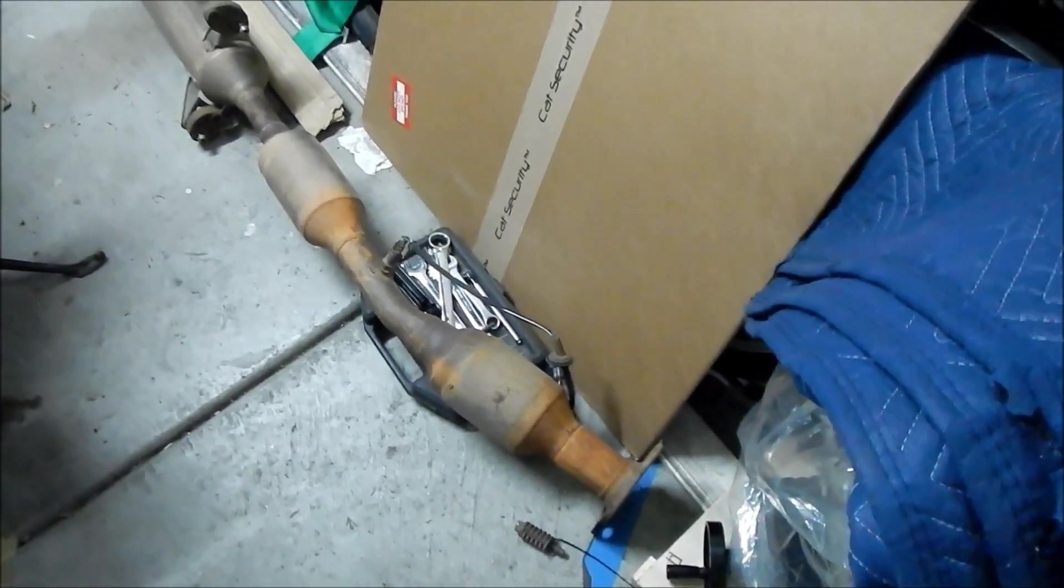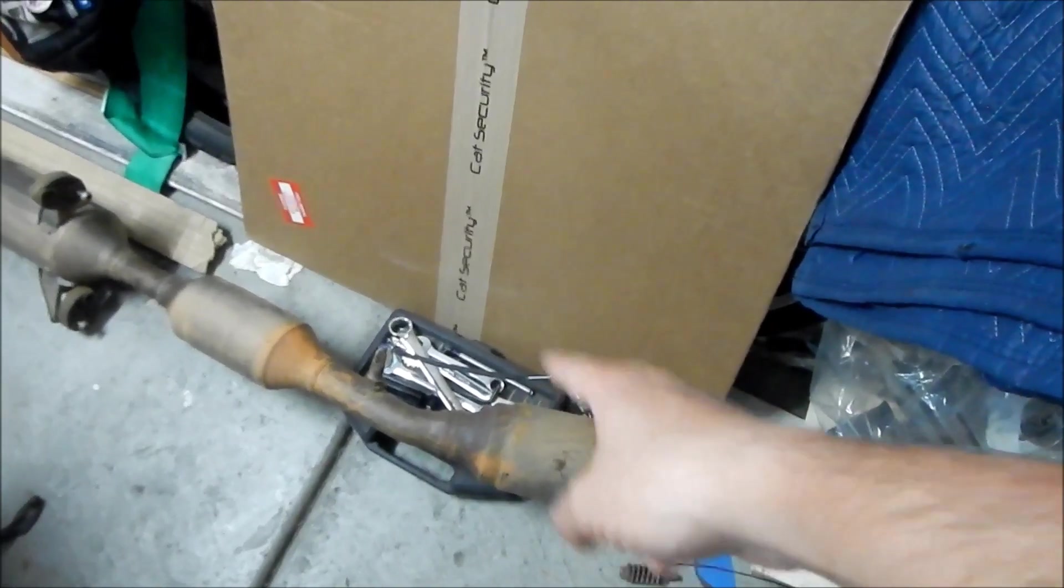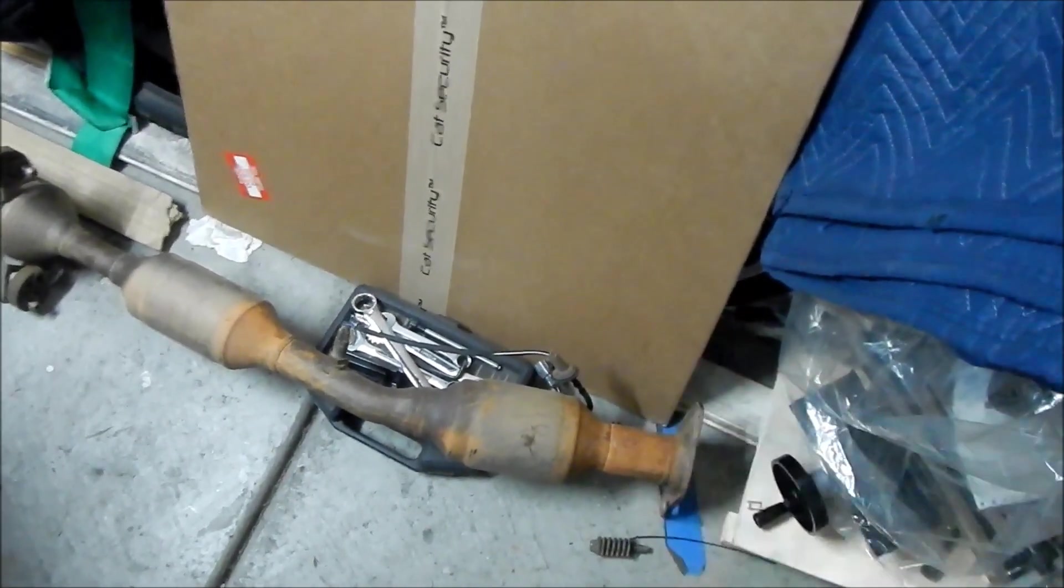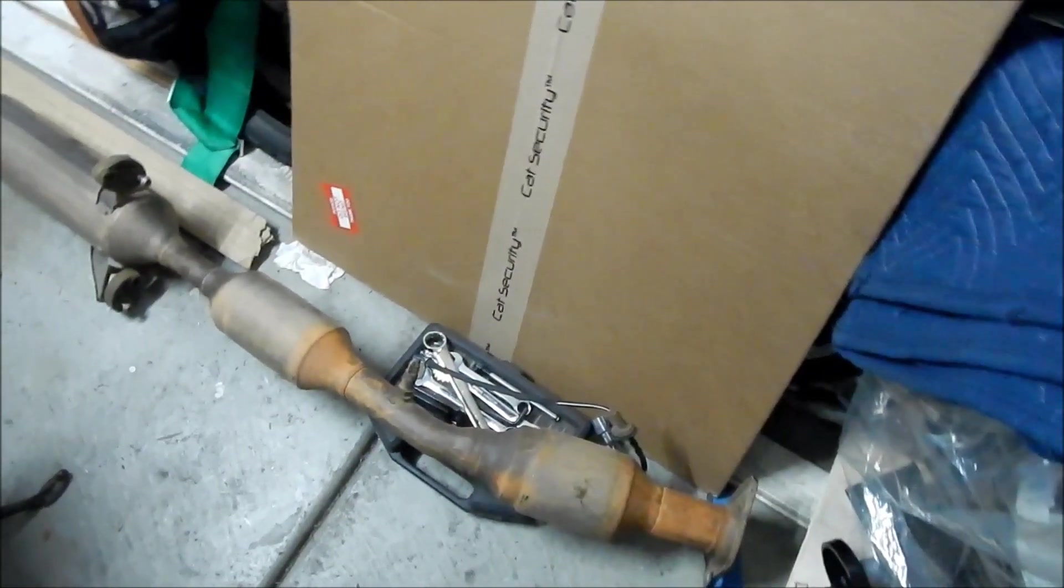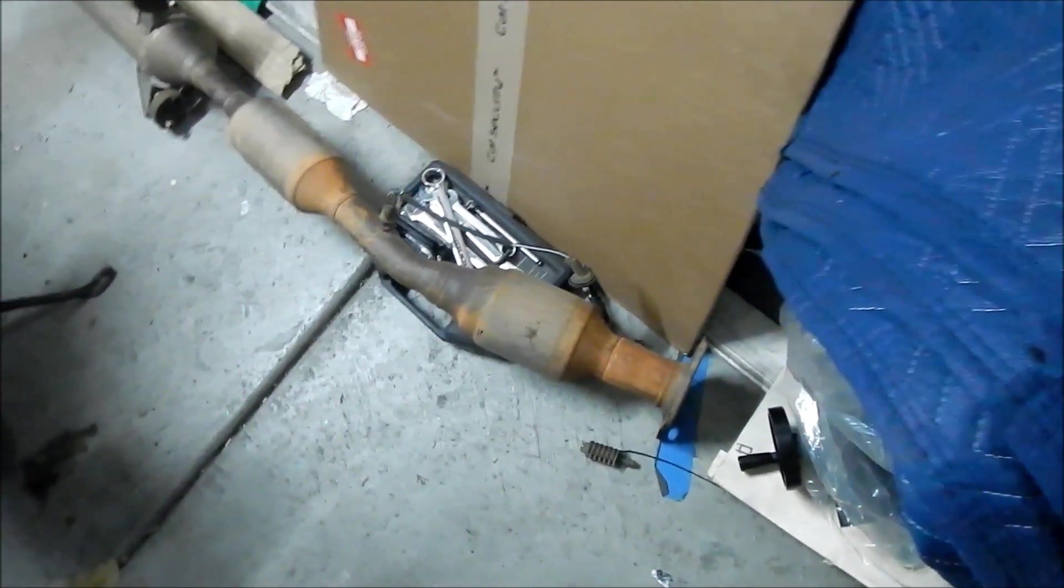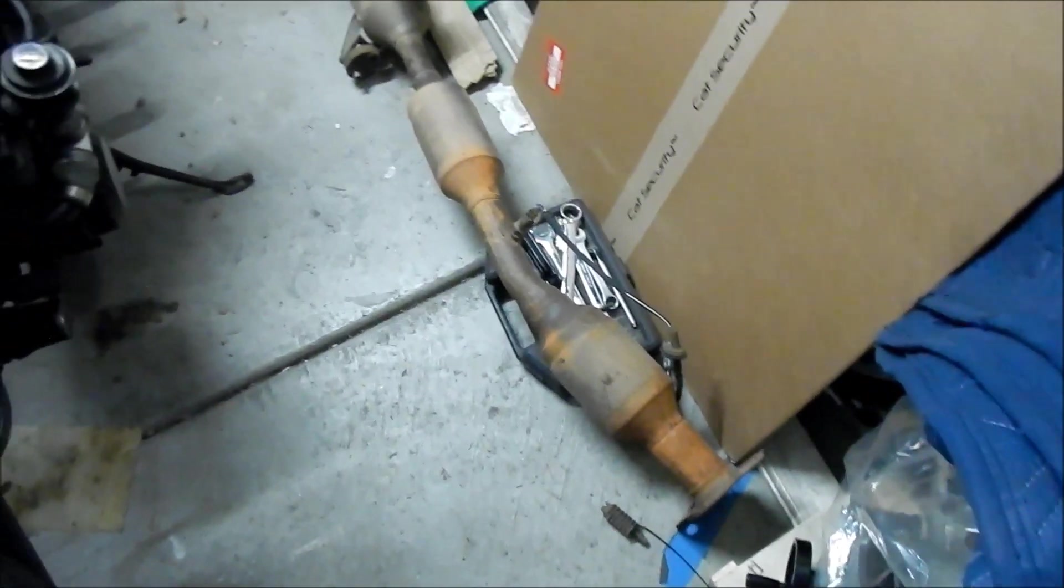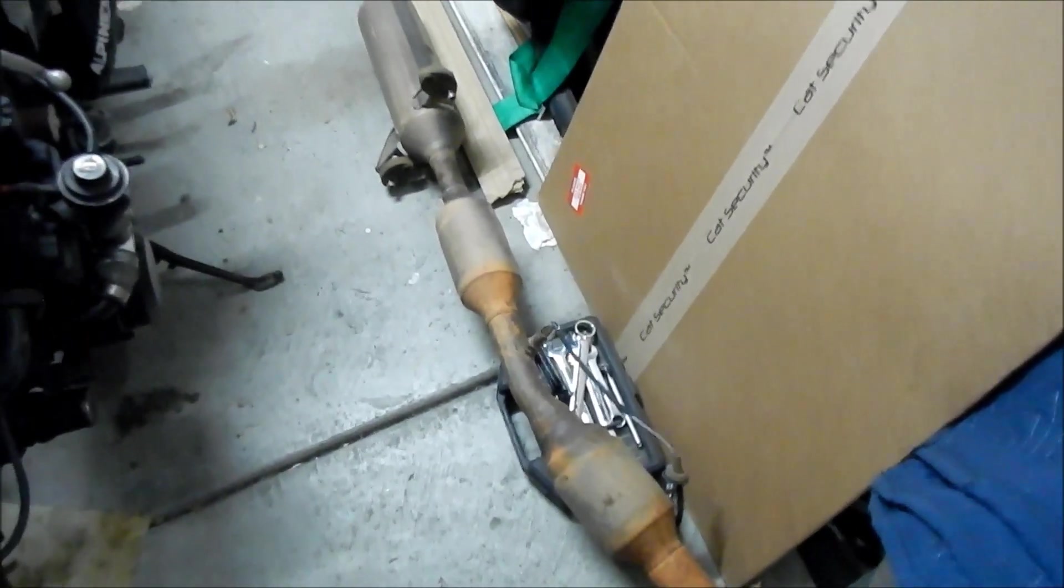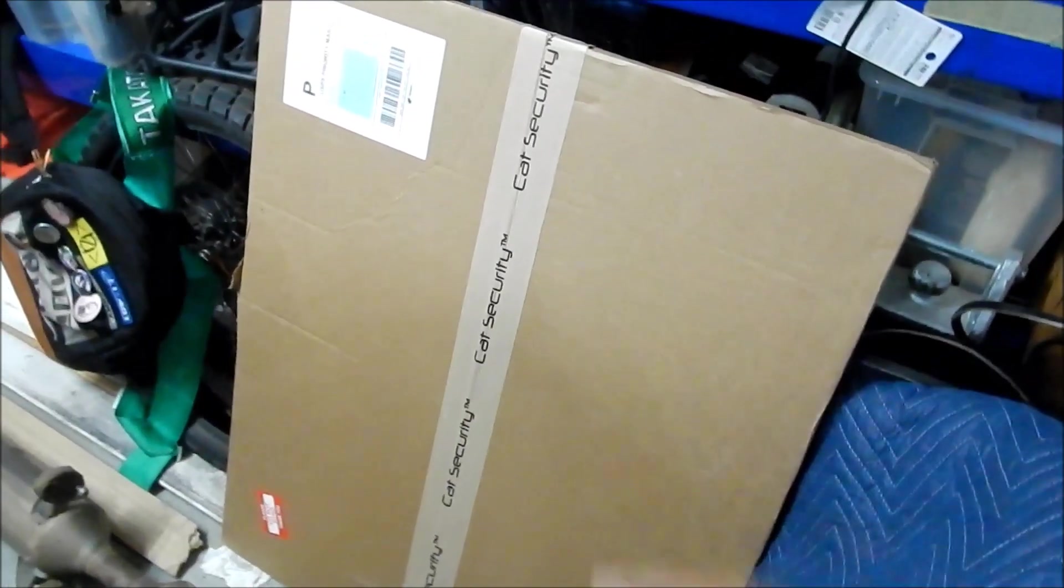So basically all I got to do is unbolt what's left of my exhaust system and then just slap this up in there, bolt it on and then plug in the O2 sensor and then we should be good to go. All right. So what things have I done to help thwart the theft of this one here? Well, I bought this here. I bought a cat security.